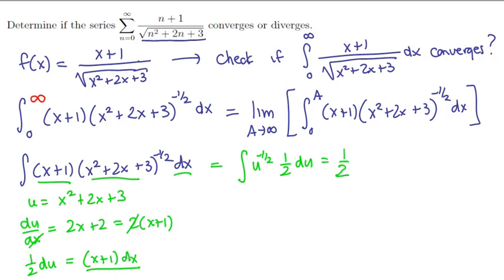The antiderivative would be 1/2 comes out in front. Upping this, we have u^(1/2) divided by 1/2 or multiplied by 2. Those cancel, so we're just left with u^(1/2). If we back substitute, our antiderivative is just (x² + 2x + 3)^(1/2).